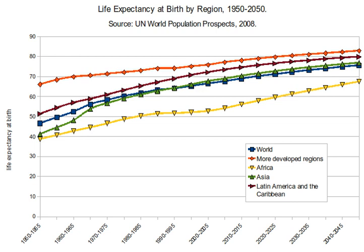Life expectancy is a statistical measure of the average time an organism is expected to live, based on the year of its birth, its current age, and other demographic factors including gender. The most commonly used measure of life expectancy is at birth, which can be defined in two ways. Cohort LEB is the mean length of life of an actual birth cohort, computed only for cohorts born many decades ago so that all their members have died. Period LEB is the mean length of life of a hypothetical cohort assumed to be exposed, from birth through death, to the mortality rates observed at a given year. National LEB figures reported by statistical agencies and international organizations are indeed estimates of period LEB.